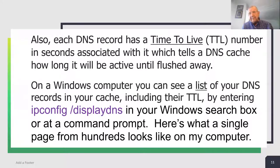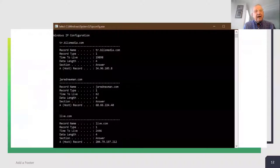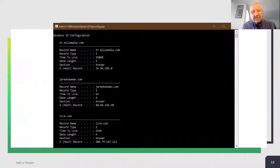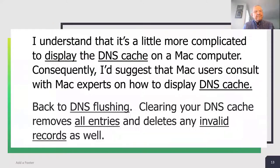On a Windows computer you can see a list of your DNS records in your cache, including their TTL (time to live), by entering 'ipconfig /displaydns' in your Windows search box or at a command prompt — don't forget the space after ipconfig. Here's what a single page from hundreds looks like on my computer. Notice each record has six elements: a record name, record type, time to live (TTL) — which varies; the first one is almost 20,000 seconds and the second is only 62 — data length, and a couple of other things. It's a little more complicated to display the DNS cache on a Mac, so I'd suggest Mac users consult with Mac experts on how to display it.